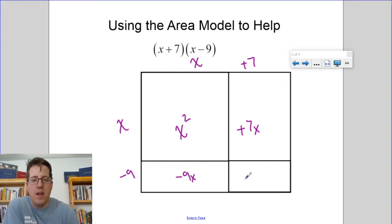Positive 7. So see how these two add together, those are the like terms, and we get x squared minus 2x minus 63.